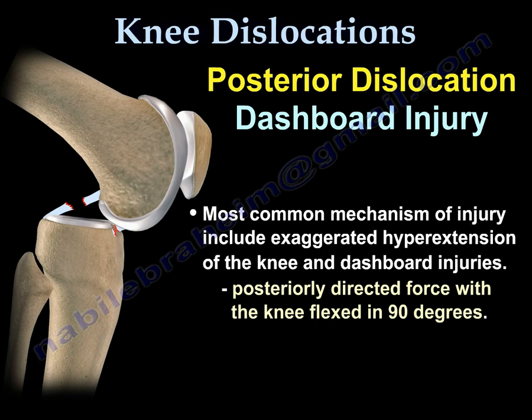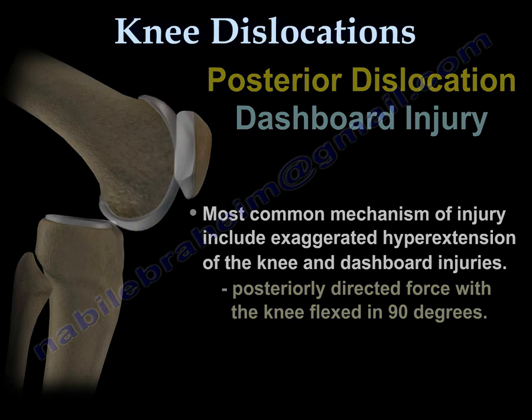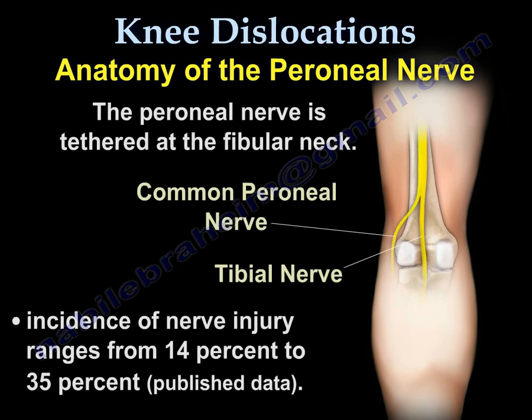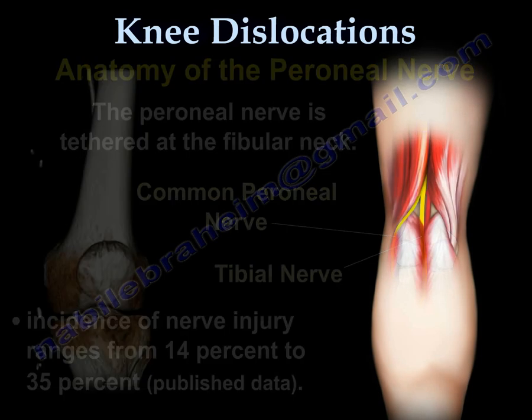Anatomy of the peroneal nerve: The peroneal nerve is tethered at the fibular neck and can be injured. The incidence of nerve injury ranges from 14% to 35%, based on published data.